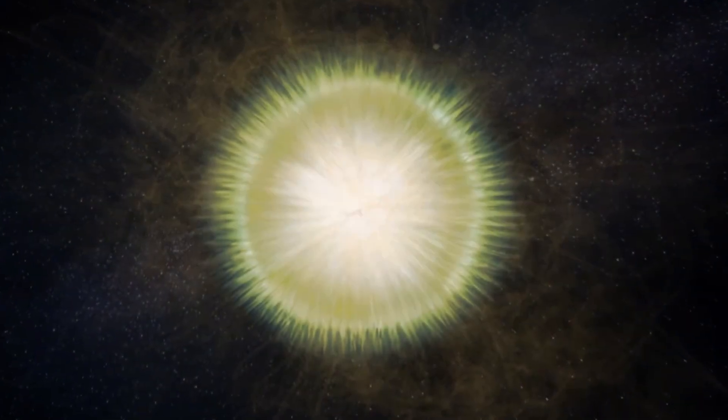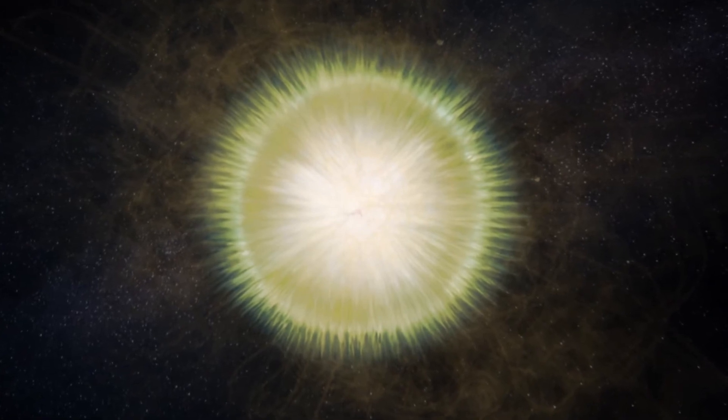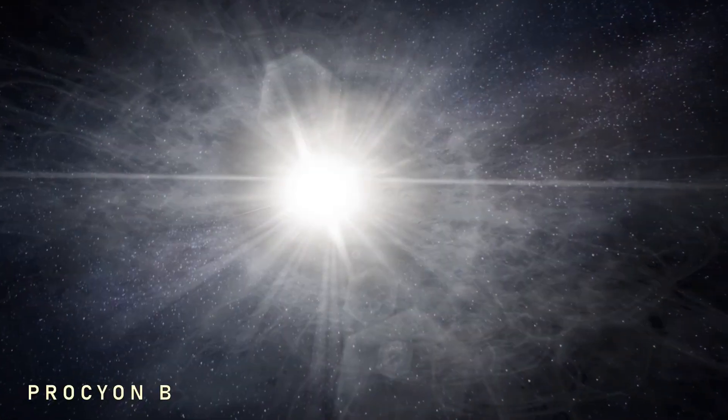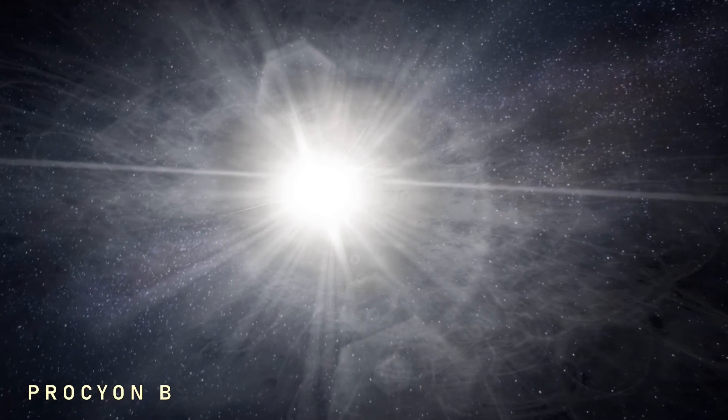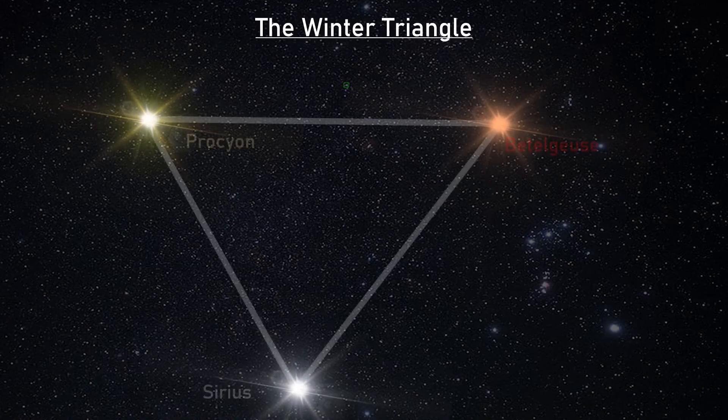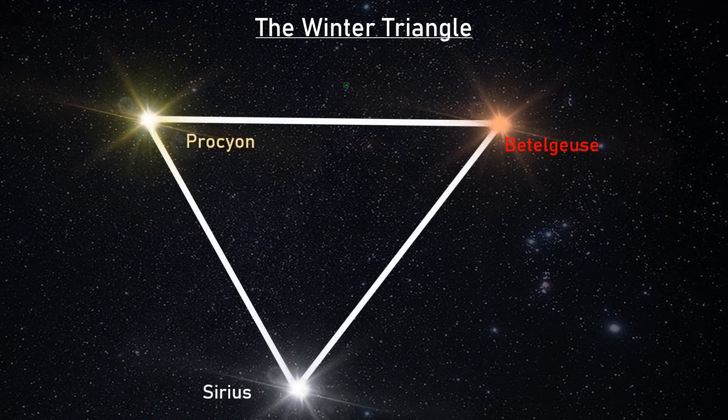Procyon is an F-class star that lies in our local area. It shares its time with a small white dwarf that once upon a time was a much more mighty star than its partner. It's one of the easiest stars to find in our skies and it shares the famous winter triangle asterism with Sirius and Betelgeuse.